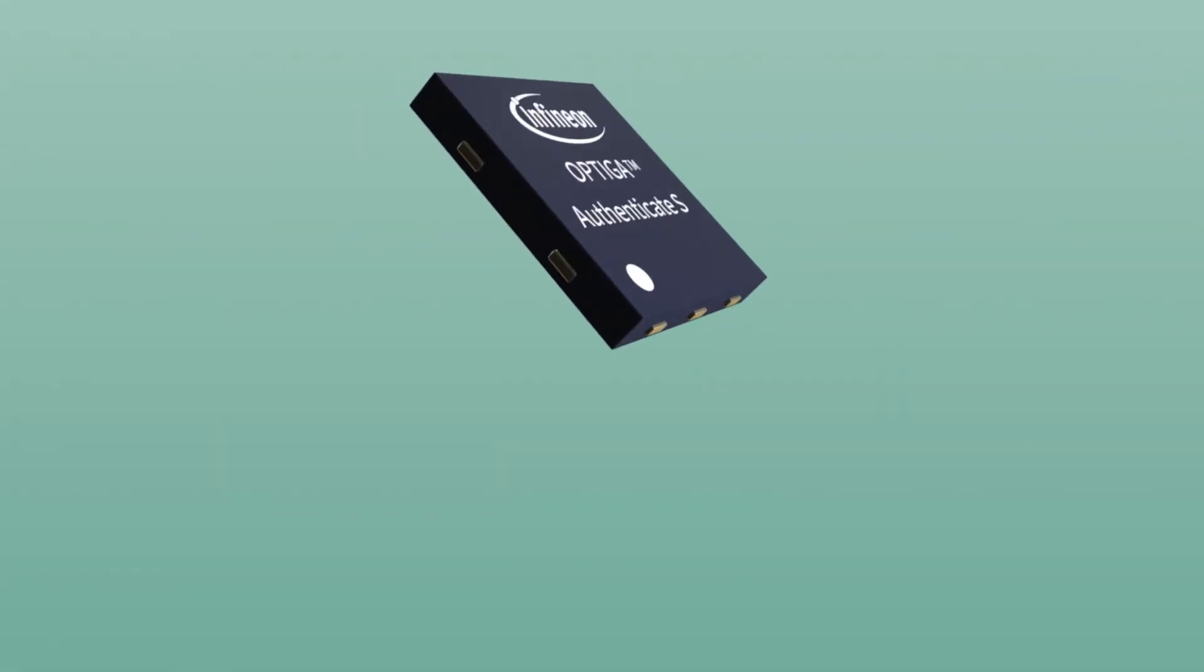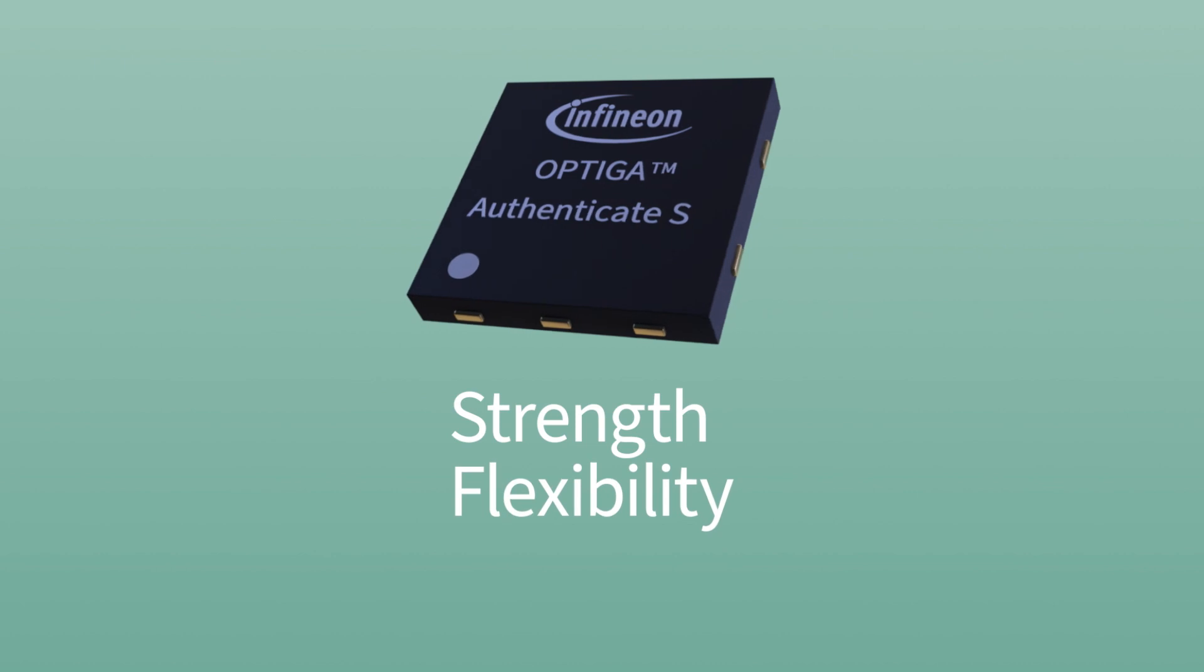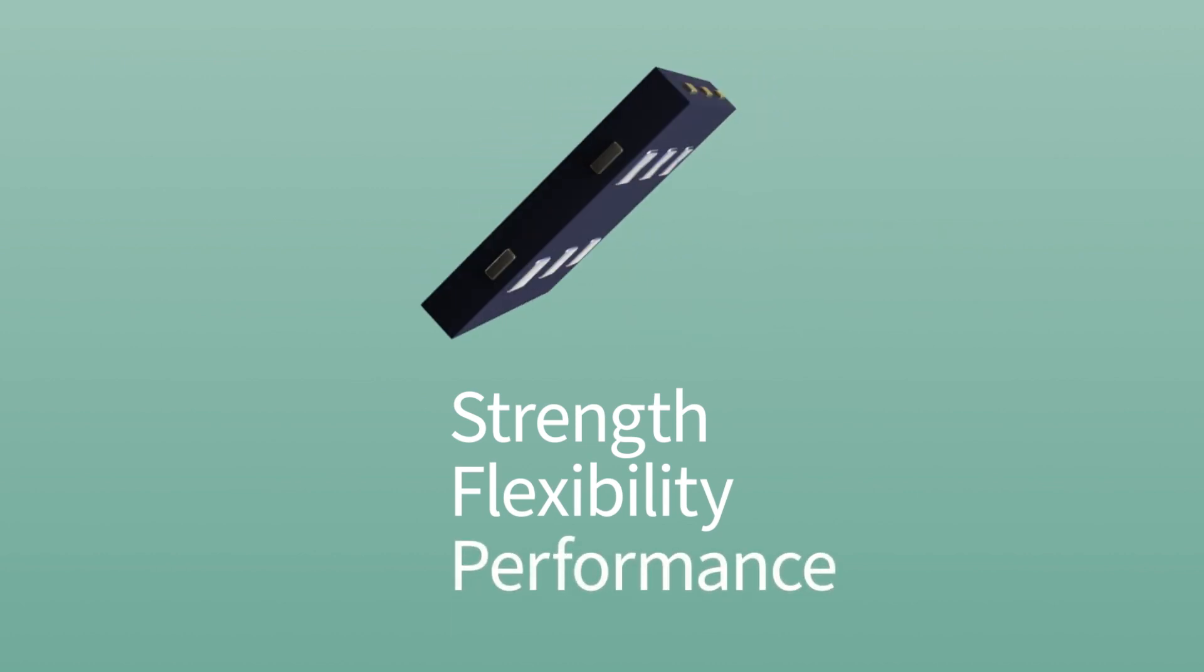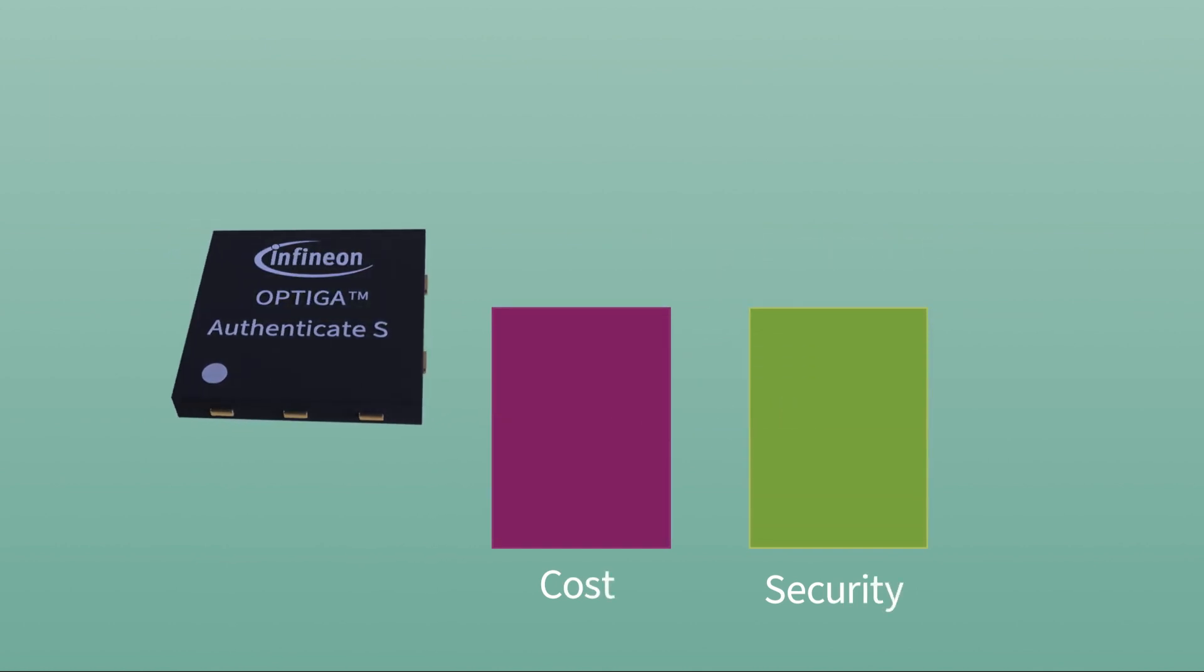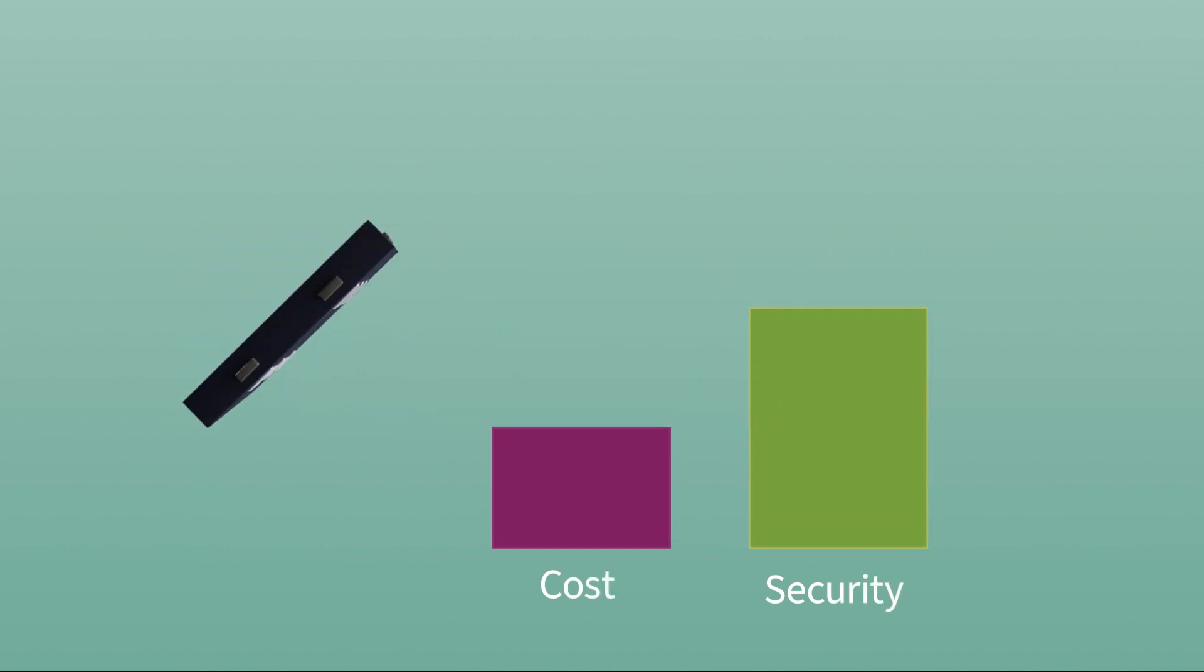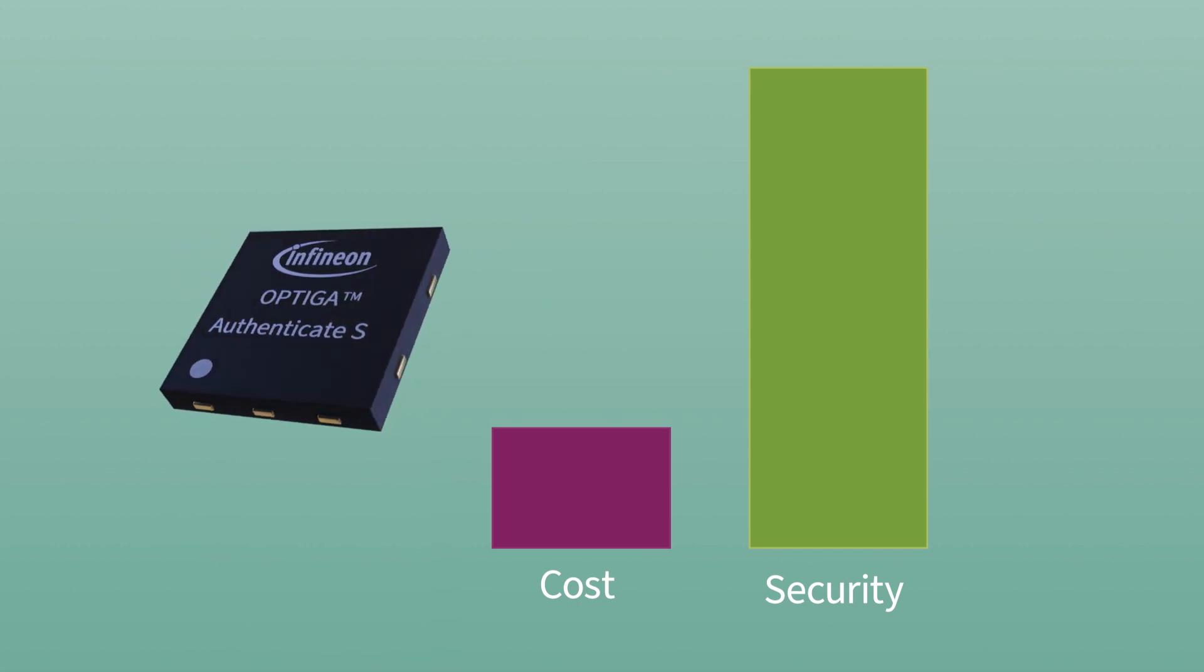In a nutshell, Optiga Authenticate S combines strength, flexibility, and performance in a highly cost-optimized solution. All this in one robust SMD package with a very tiny footprint delivering best-in-class authentication capabilities coupled with enhanced security and the ultimate in flexibility.